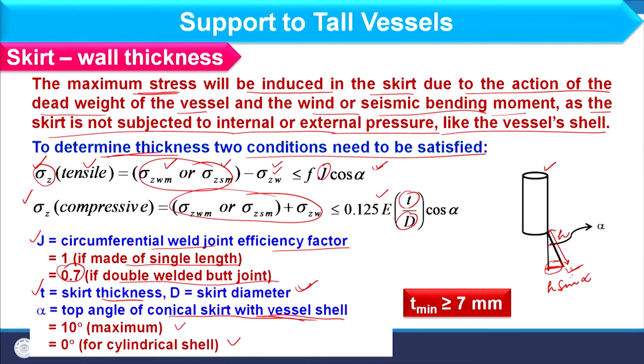Whatever thickness is calculated for the skirt, it should never be less than 7 mm. If the calculated value is less than 7 mm, a minimum thickness of 7 mm must be used for the skirt support. This criterion should be checked at the end of all calculations.